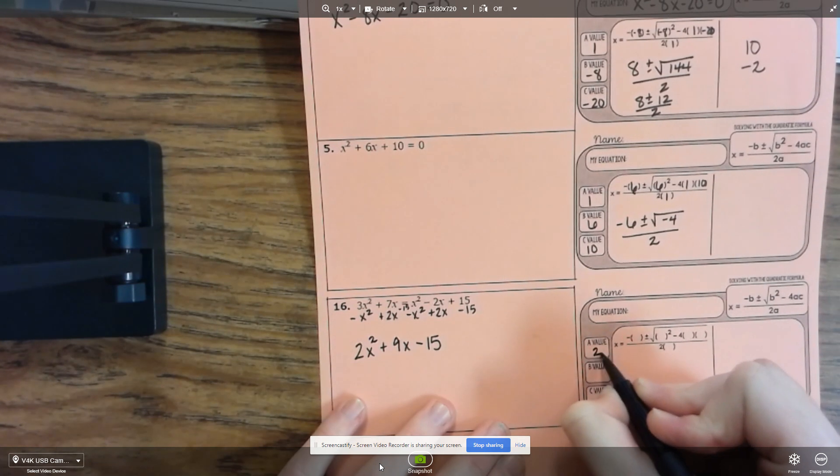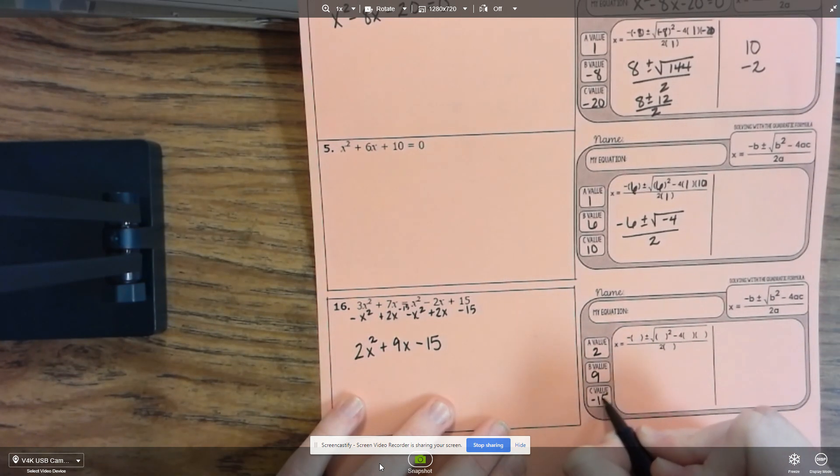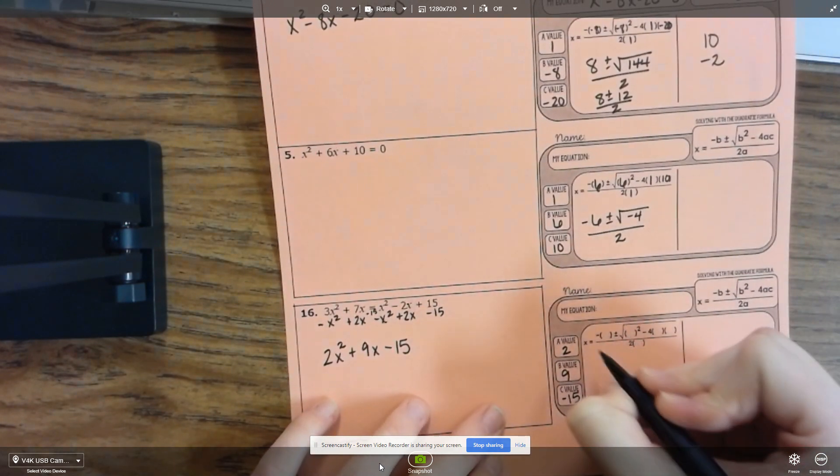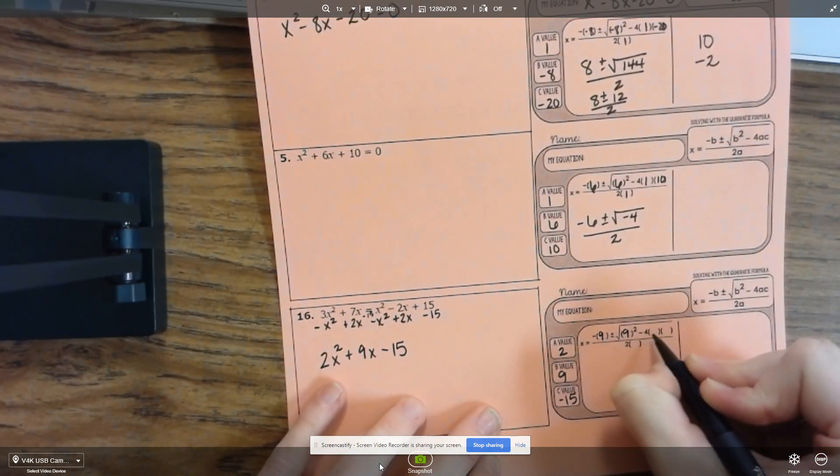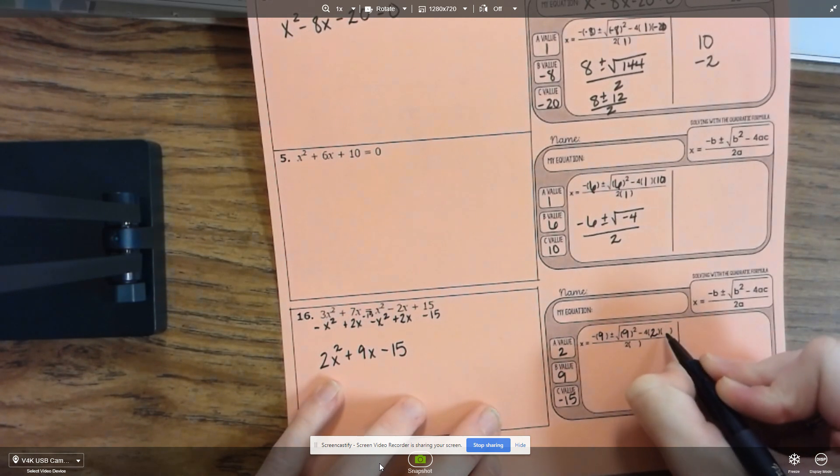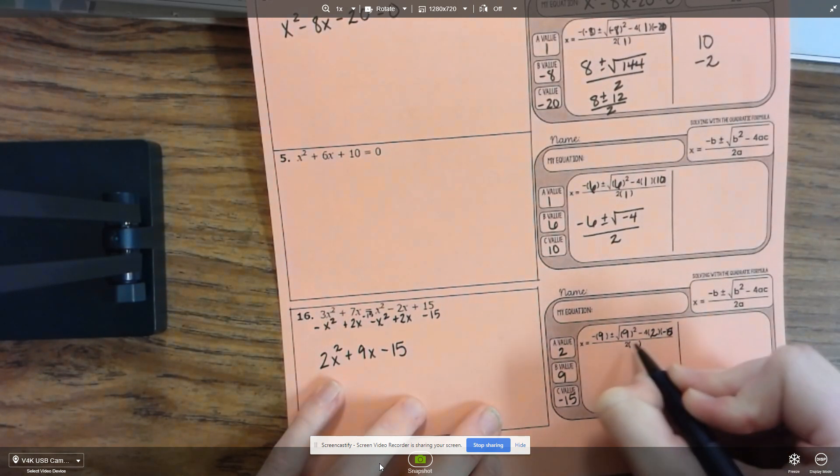So my a value is a 2, b value is a 9, c value is a negative 15. So here I've got a negative 9, plus 9 squared, minus 4 times 2 times negative 15.